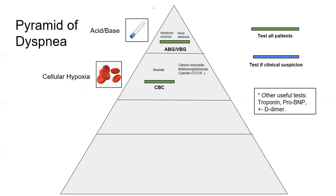Those are the ones you really want to think of. The other one is cyanide — interestingly, there's really no bedside test to diagnose cyanide; there's a send-out that takes days. You have to rely on clinical status. A lactate can be helpful — in someone with smoke inhalation, a lactate above 10 is pretty sensitive and specific for cyanide poisoning. To diagnose methemoglobin and CO, you need a co-oximetry (co-ox).